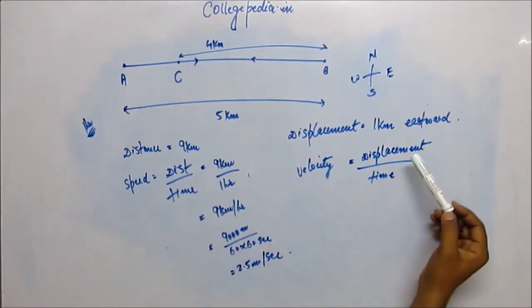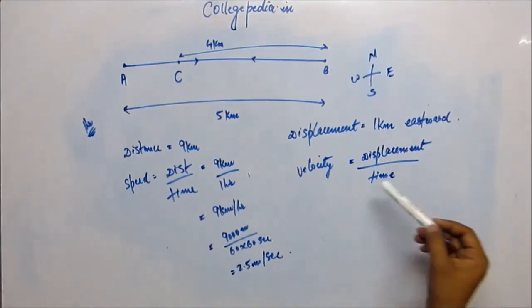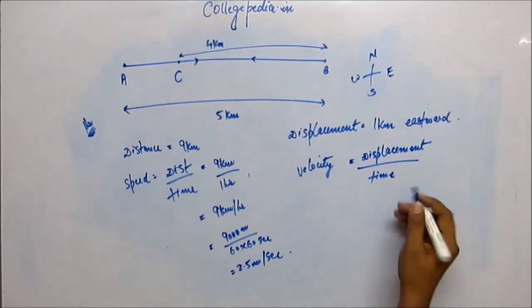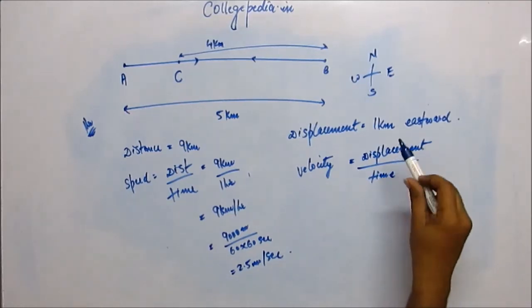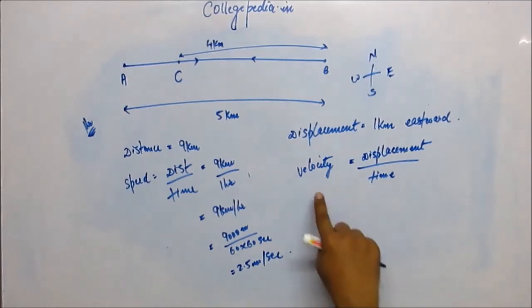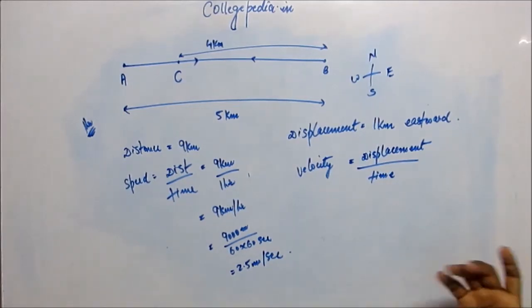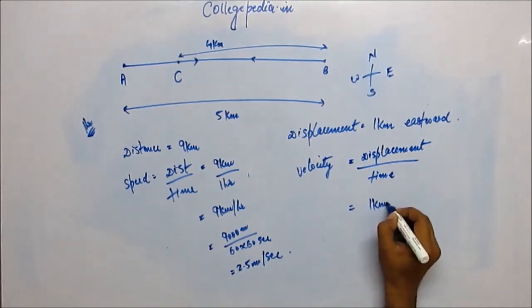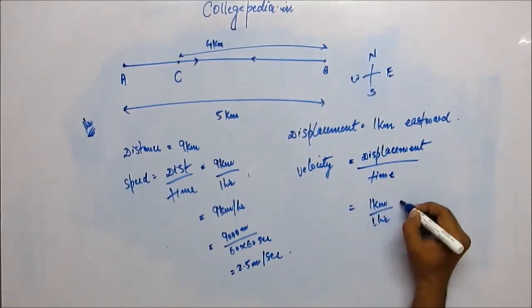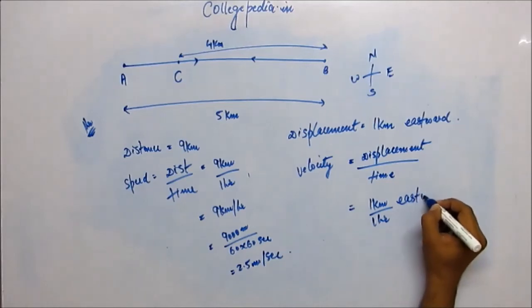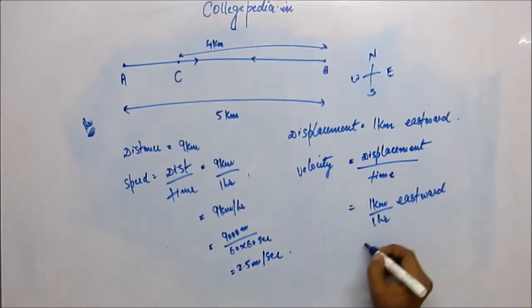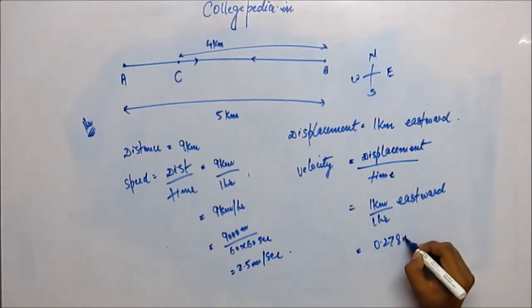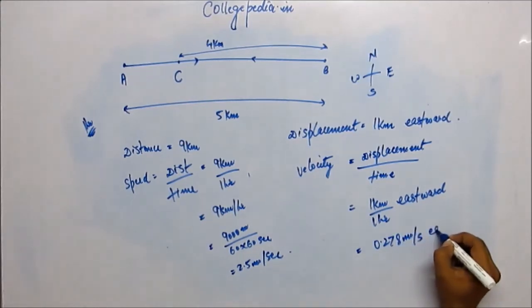When you put displacement here, you'll put 1 kilometer eastward upon the time taken. So velocity will also be a vector quantity. Velocity would be 1 kilometer upon 1 hour eastward. In SI units, it will be 0.278 meters per second eastward.